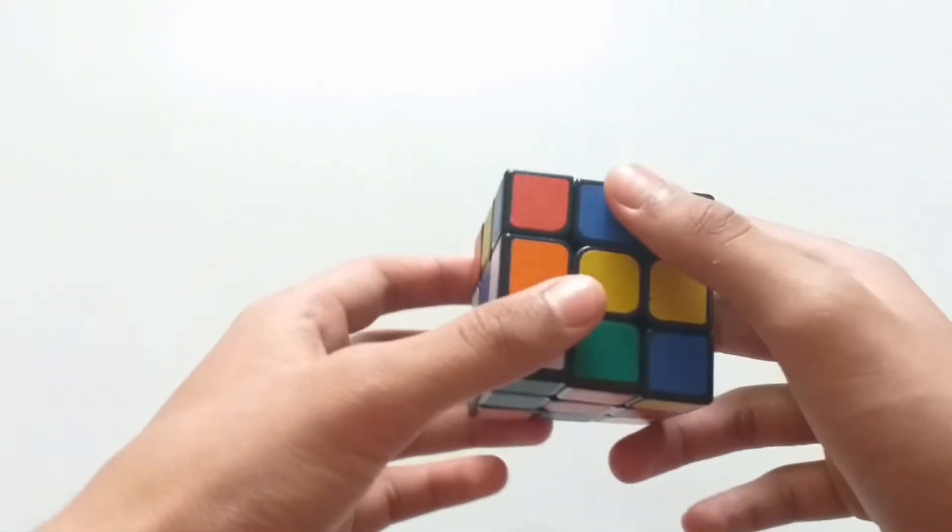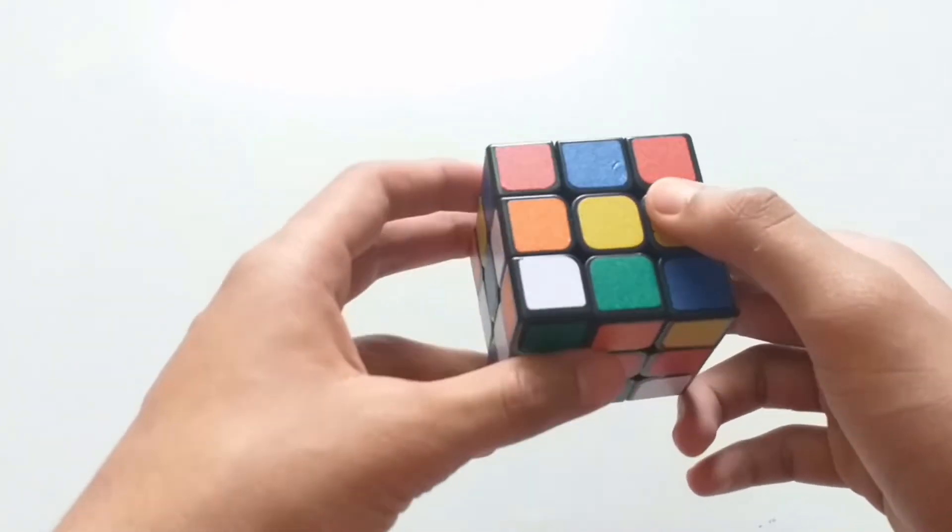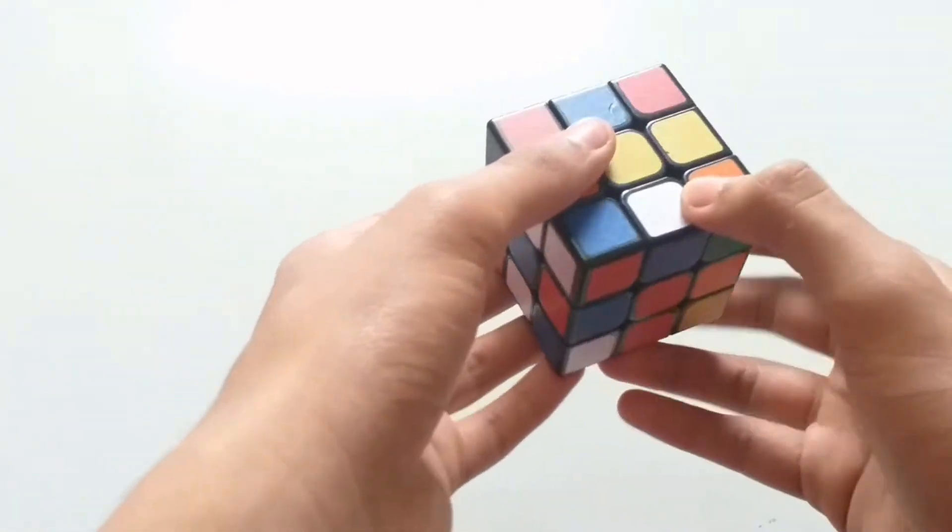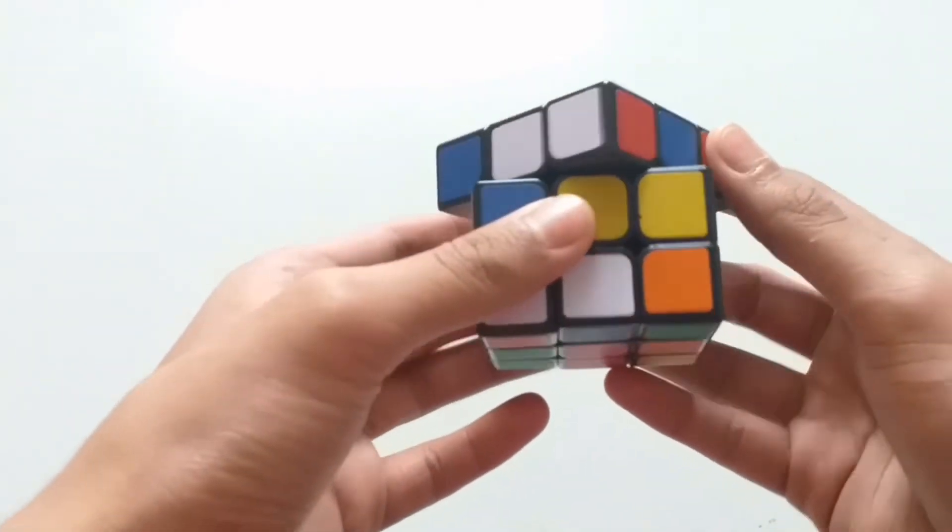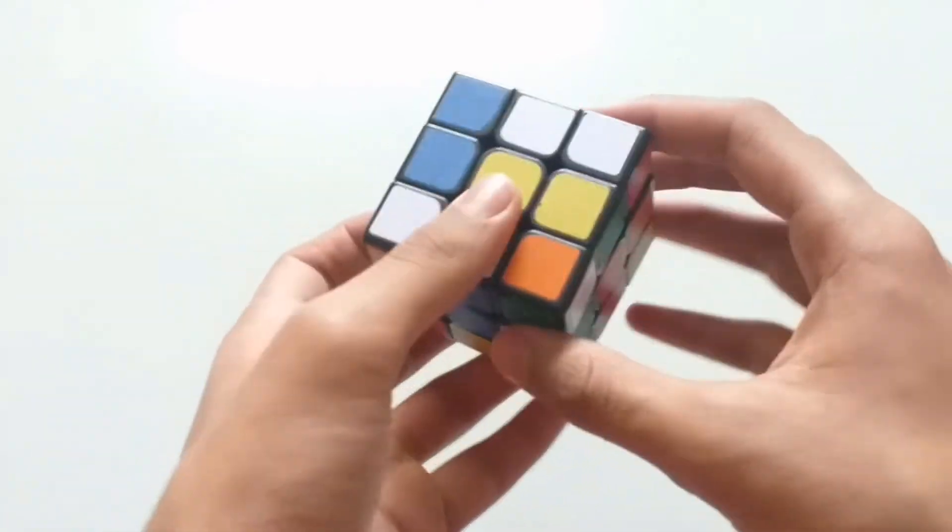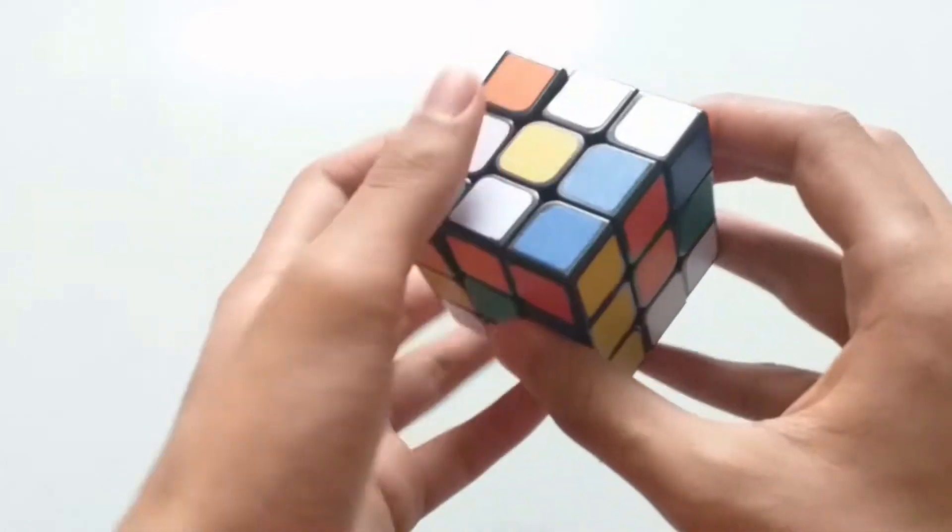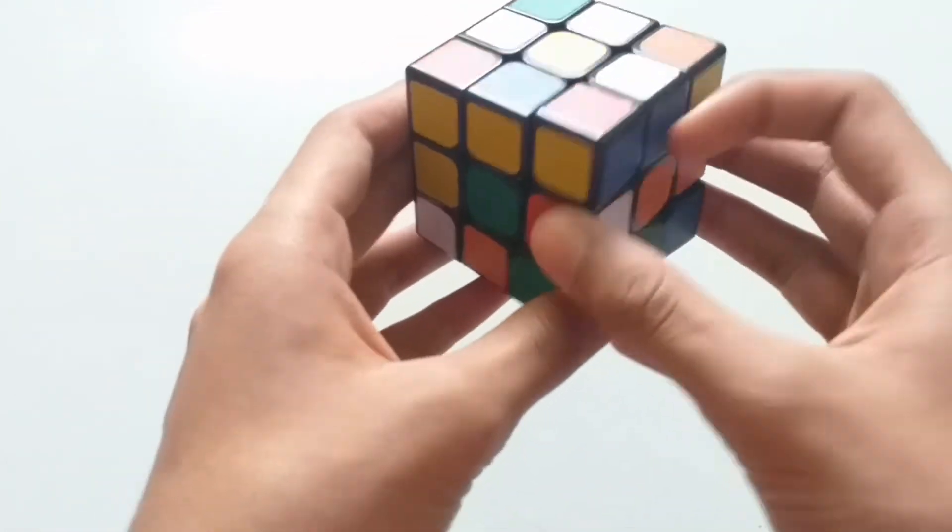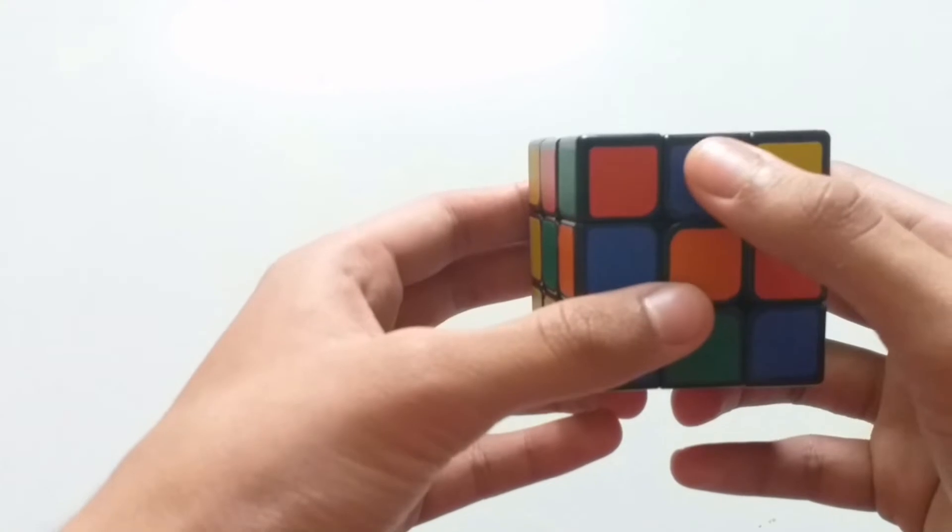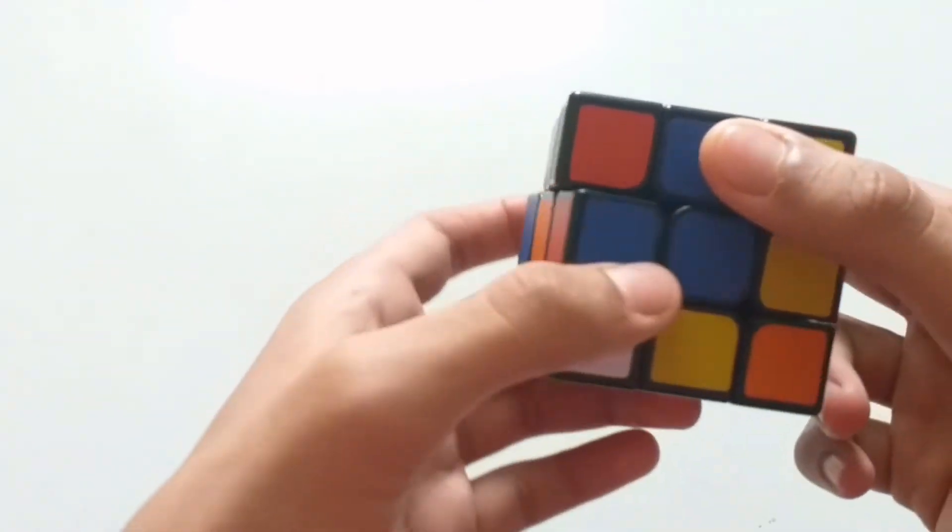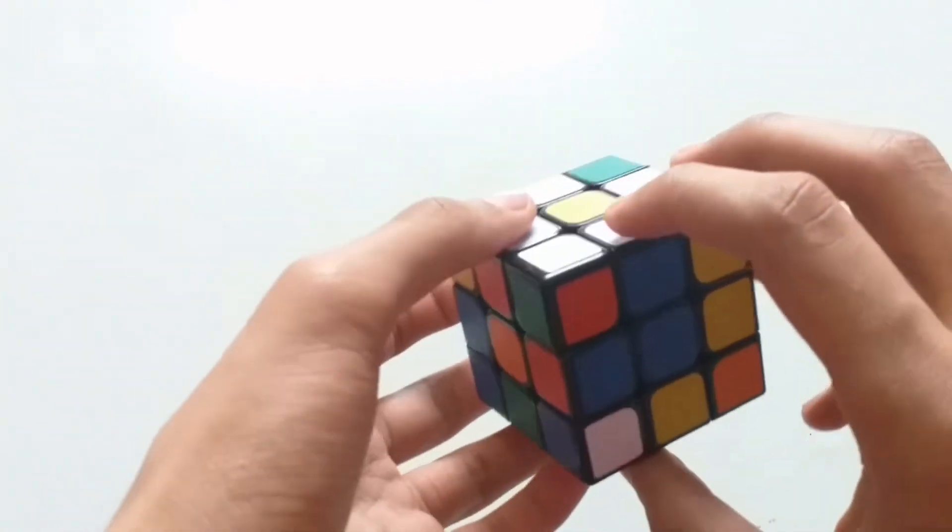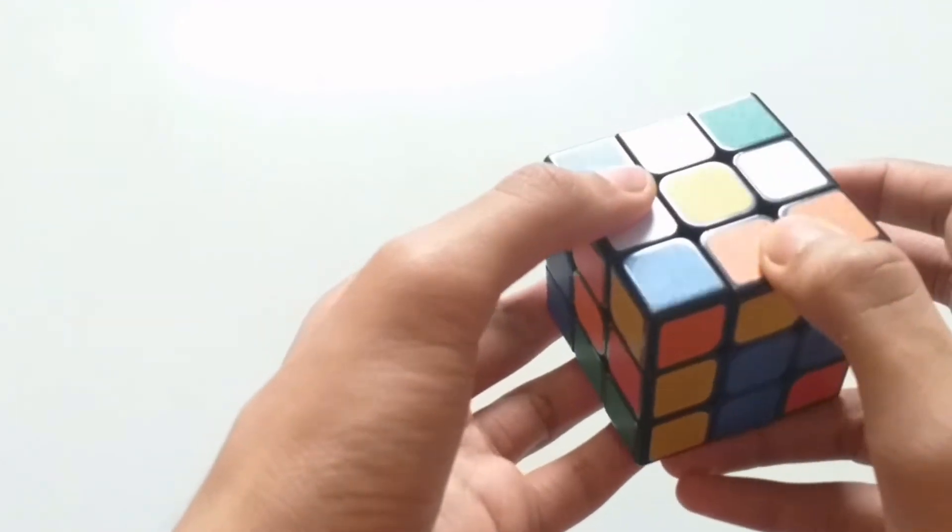Make a white cross with a white center. Match the edge pieces with the respective color's center and turn it 180 degrees.